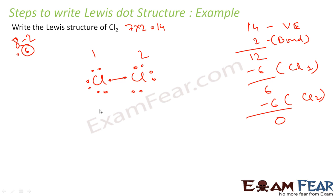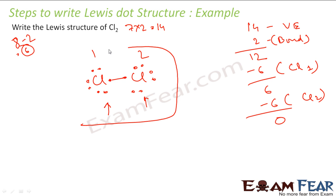Now let's see if every atom in this molecule is happy. Chlorine 1 is happy because it has 8 electrons. Chlorine 2 is happy — it has 8 electrons: 6 plus 2 shared. Everybody is happy, so this is a happy structure for chlorine gas.